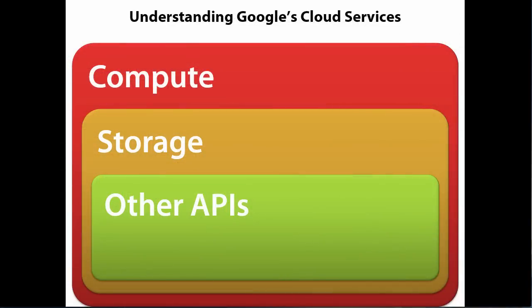At a high level, most cloud implementations have this sort of layout, and so does Google. There are offerings around compute — virtual machines — ranging from infrastructure as a service, where you fully own it, to platform as a service where you host your websites. There are offerings around storage ranging from NoSQL buckets all the way up to relational data stores. Google's cloud also has a number of relatively unique services, such as Google Translate and the Prediction API, that make their offering interesting and compelling depending on your particular use case.